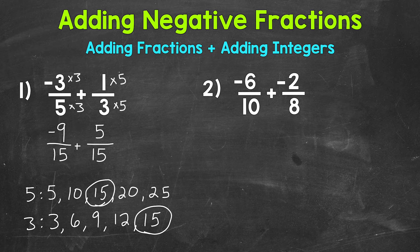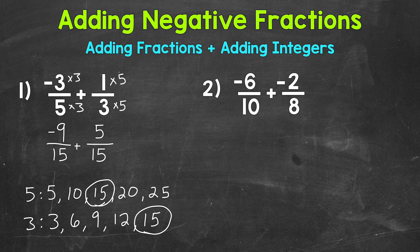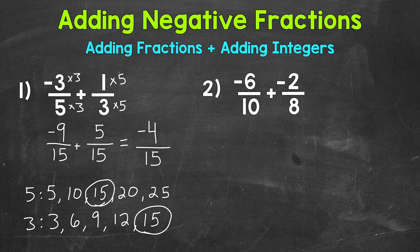Now we have a common denominator, so we are able to add. Just like with positive fractions, we add our numerators: negative nine plus positive five gives us negative four. That's our numerator, and we keep our denominator of 15. The only common factor between our numerator and denominator is one, so we are in simplest form. Our answer is negative four fifteenths.